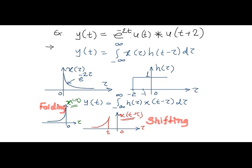Now in the convolution integral formula let us interchange the role of x of tau and h of tau. Let us keep h of tau fixed here and perform folding and shifting over x of tau.